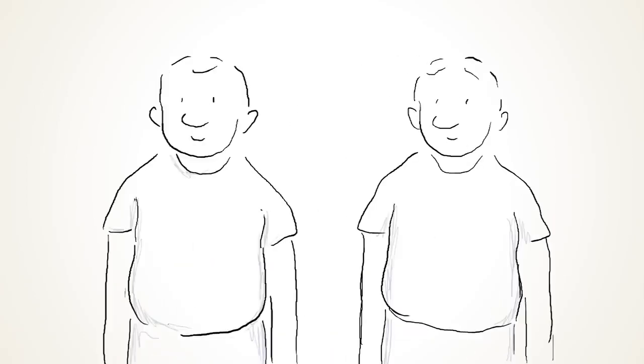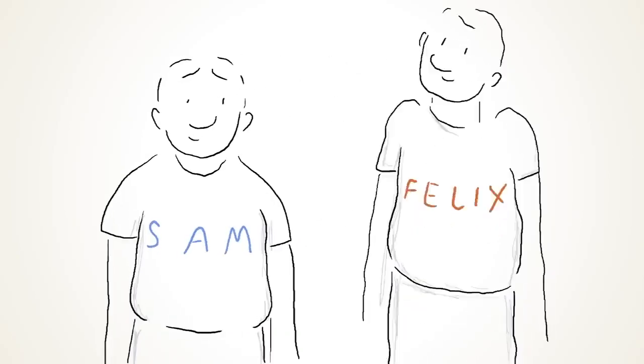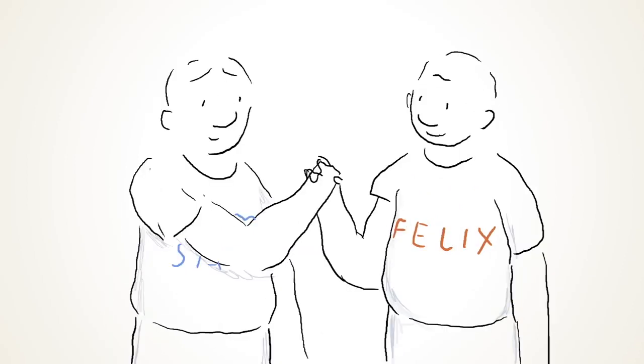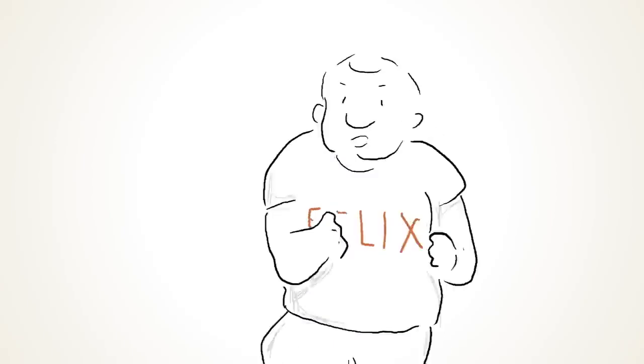Sam and Felix are identical twins, both planning to go on a diet. They share the same height, weight, fat and muscle mass. But Sam is hoping to lose weight slowly, while Felix wants to go fast.